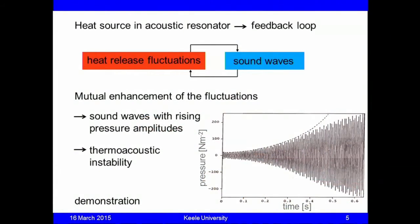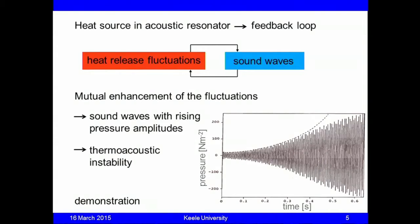If you put these two processes together — and they do occur together when you have a heat source in an acoustic resonator — the heat source produces sound waves, those waves get reflected in the resonator, come back, travel through the heat source, and you get this interaction. You get feedback between heat release fluctuations and sound waves. If they are phased accordingly, one enhances the other: the heat release fluctuations enhance the sound amplitude, and the sound waves enhance the oscillations of the rate of heat release. This mutual enhancement leads to sound waves with rising pressure amplitudes, called a thermo-acoustic instability.